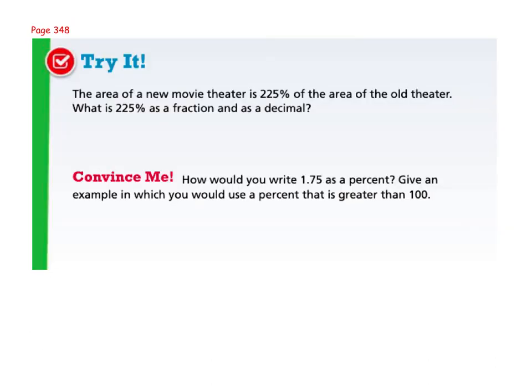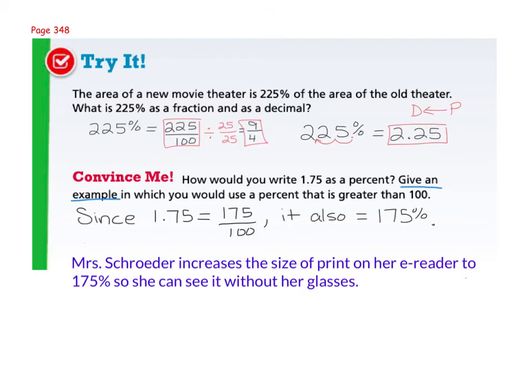Now I'd like you to pause the video and do the try at the bottom of the page. Then restart to check your work. So 225% in fraction form could be written as either 225 over 100, or you could simplify it to 9 over 4. In decimal form, just move the decimal point two spaces to the left. Remember, it starts on the right side of the 5 to get 2.25.